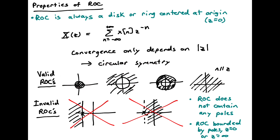Here are examples of invalid ROCs. We can't have a region of convergence that's to the left of some point, or to the right of some point. Those don't work because they don't have the circular symmetry we would expect when looking for where this sum converges.